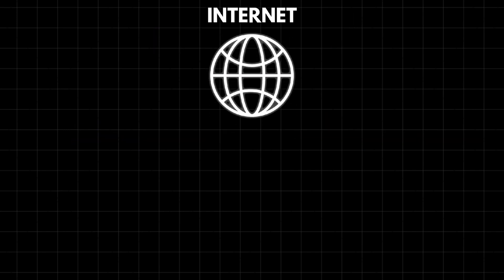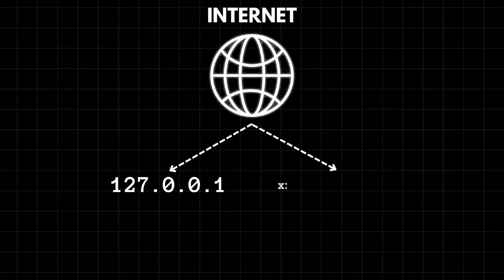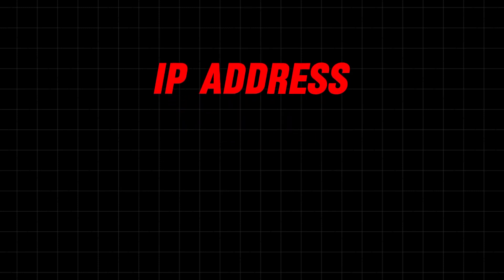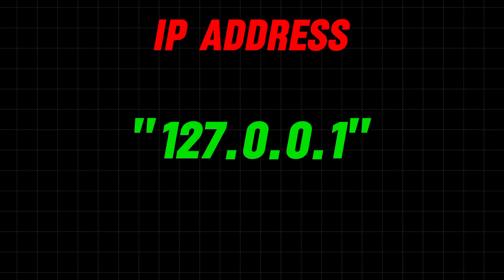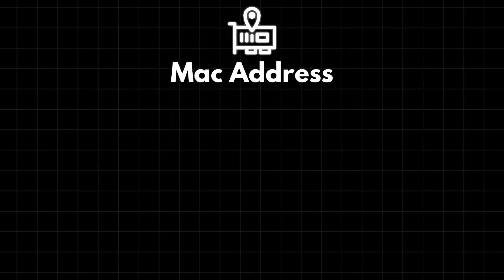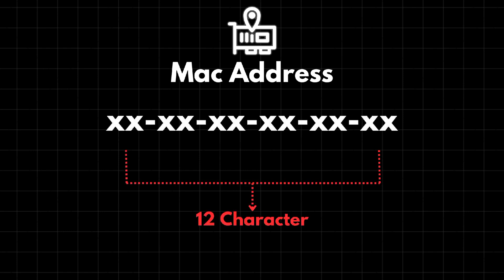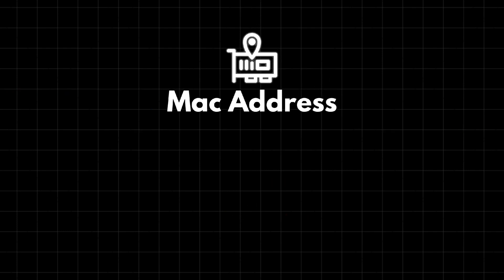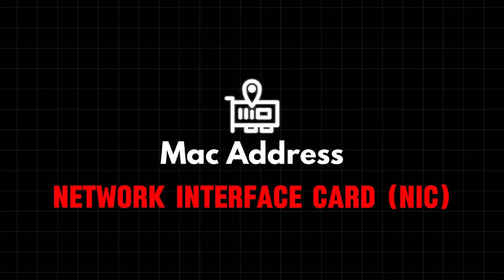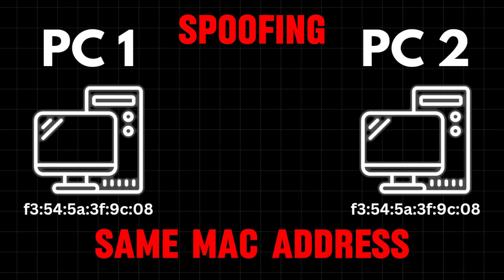Every device on the internet has two unique identifiers: its IP address and its MAC address. A MAC address is a unique 12-character code formatted as six colon-separated pairs. It's a burned-in identifier on your device's network interface card and is typically not changeable. However, it can be spoofed. Spoofing refers to copying and using the MAC address of another device on the same network.